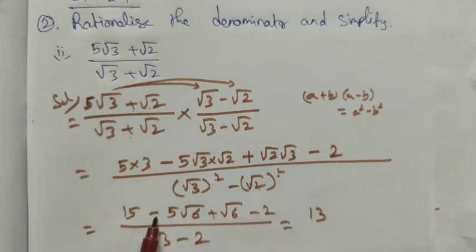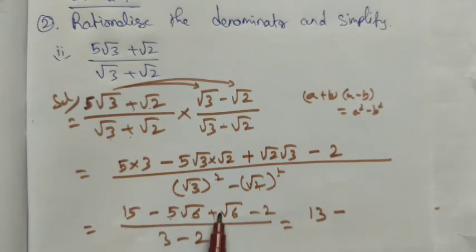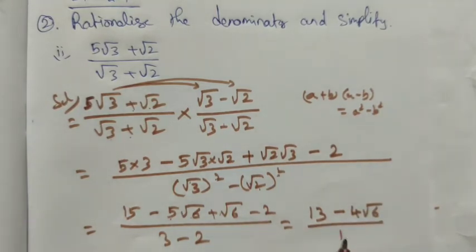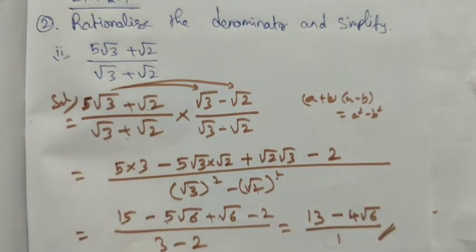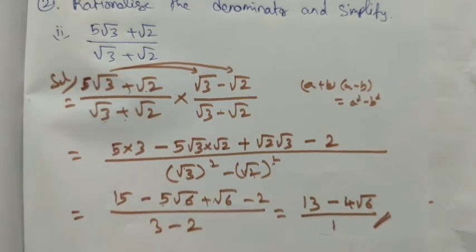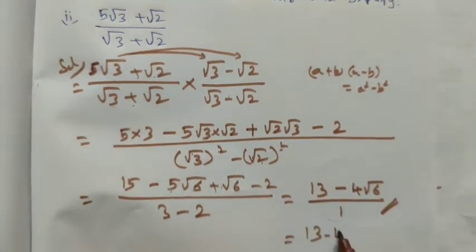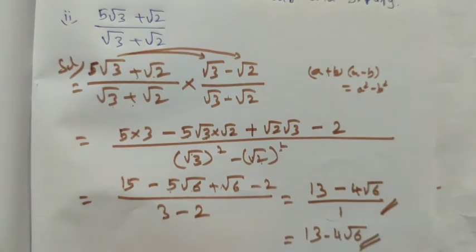In the numerator, we have -5√6 and +1√6. When we subtract we get -4√6. The denominator is 1. So the denominator is rationalized. The final answer is 13 - 4√6. We can write it directly as 13 - 4√6.